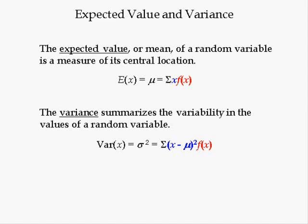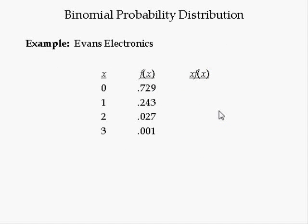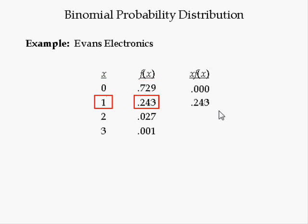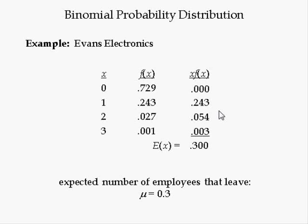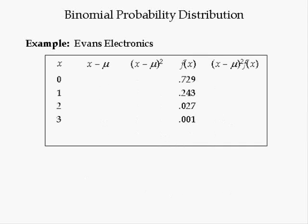We're going to use the following equations to verify that the shortcut equations give correct values for the expected value and variance. To compute the expected value, we first compute the products of the values of X and their respective probabilities. The probabilities 0.729, 0.243, 0.027, and 0.001 were found using the binomial equation or the tree diagram. The products are: 0 times 0.729 equals 0.000; 1 times 0.243 equals 0.243; 2 times 0.027 equals 0.054; 3 times 0.001 equals 0.003. Summing gives an expected value of 0.3, the same as the shortcut equation.